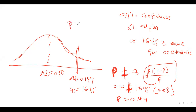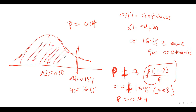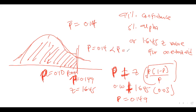Since the sample proportion given in the question is 0.14, and 0.14 is less than the maximum allowable proportion of 0.149, it lies within the acceptance region. So we accept the null hypothesis.